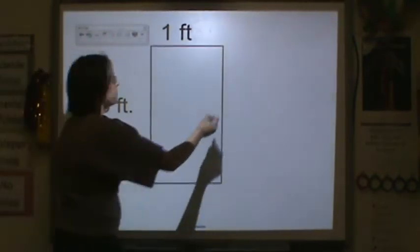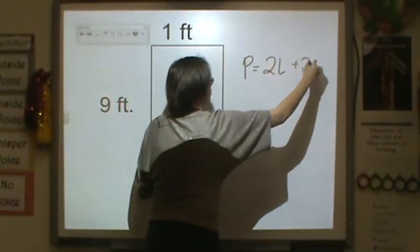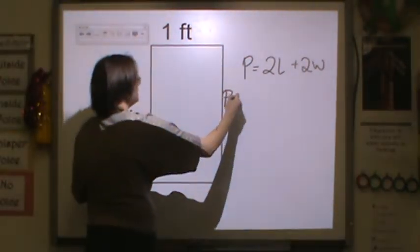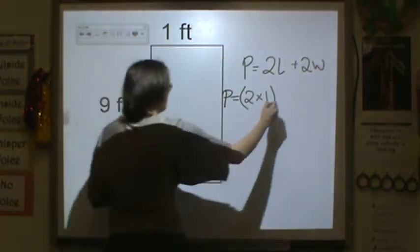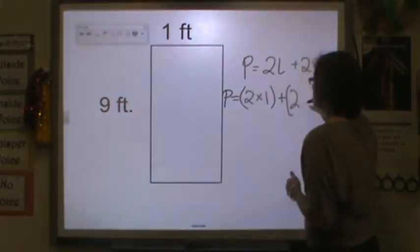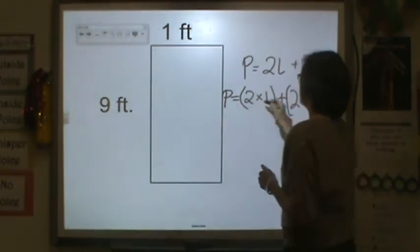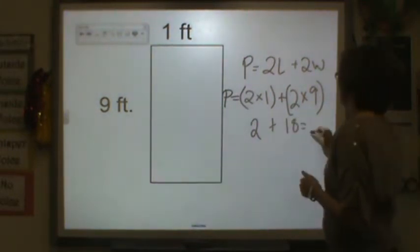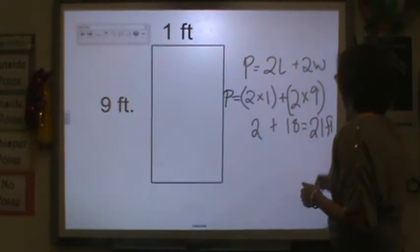Next, remember, perimeter is equal to 2L plus 2W. Make sure you're writing that formula. So, P is equal to 2 times my length is 1 here, plus 2 times 9, because that's my width. 2 times 1 is 2, plus 2 times 9 is 18. That is equal to 21, and we're in feet, so we have 21 feet.